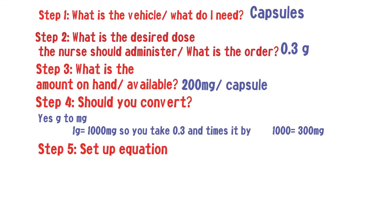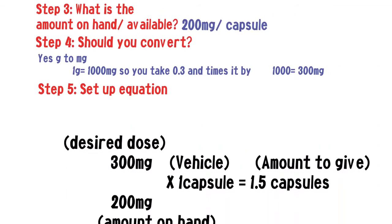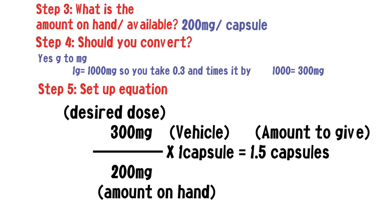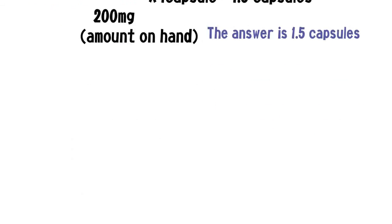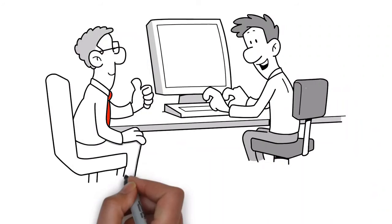So we take 0.3 times 1000, which gives us 300 milligrams. Step five: set up the equation. The desired dose is 300 milligrams — the answer from step four — divided by the amount on hand, which is 200 milligrams, times the vehicle, which is one capsule. That equals 1.5 capsules, which is our answer for the amount to give.